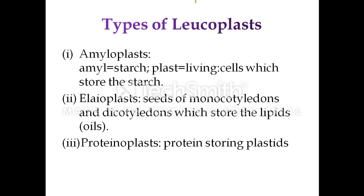Leucoplasts are accordingly classified as: amyloplasts, which store starch; elaioplasts, which are present in seeds of monocotyledons and dicotyledons and store lipids or oils; and proteinoplasts, which store proteins.